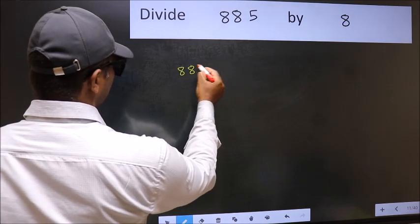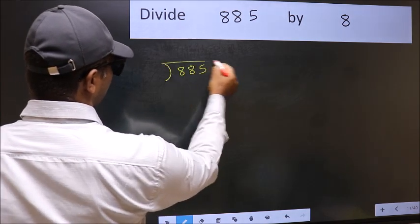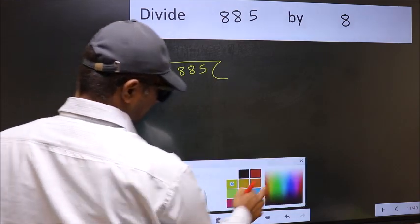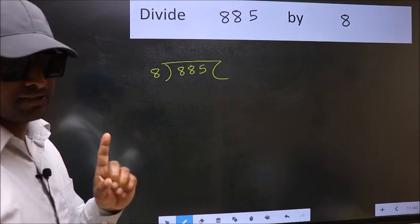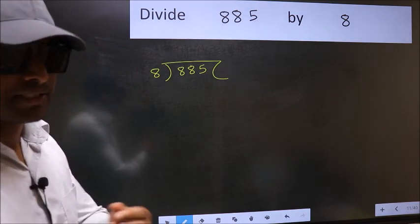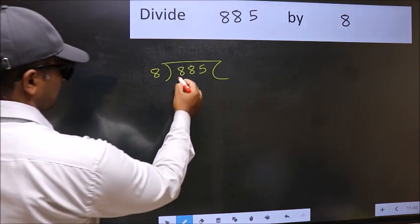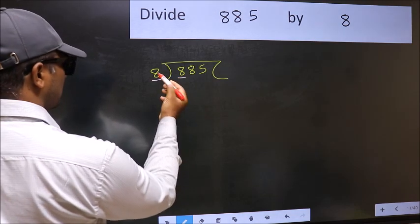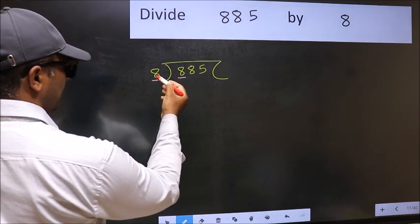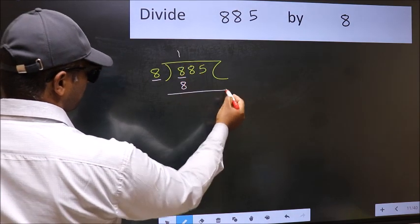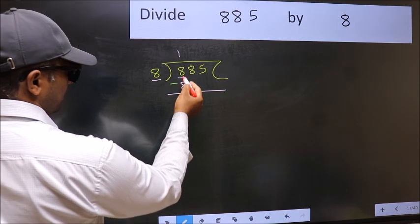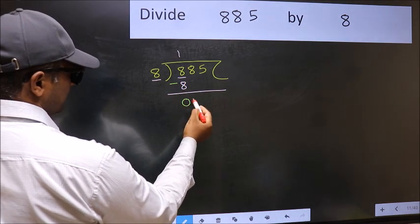885 and 8 here. This is your step 1. Here we have 8 and here also 8. When do we get 8 in 8 table? 8 once, 8. Now you should subtract. 8 minus 8, 0.